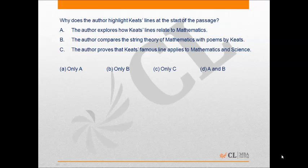Statement A says the author explores how Keats' lines relate to mathematics. This is correct. Statement B says the author compares the string theory of mathematics with poems by Keats. This is incorrect as the author does not relate the poem of Keats with string theory.